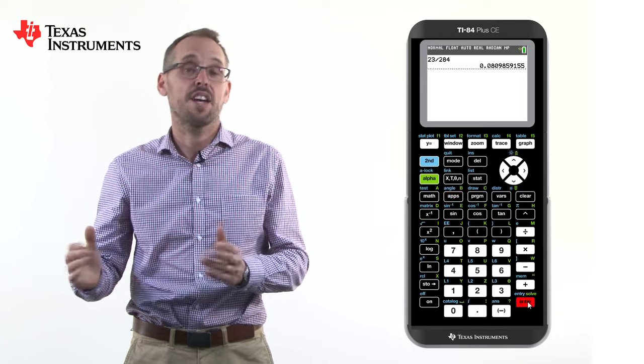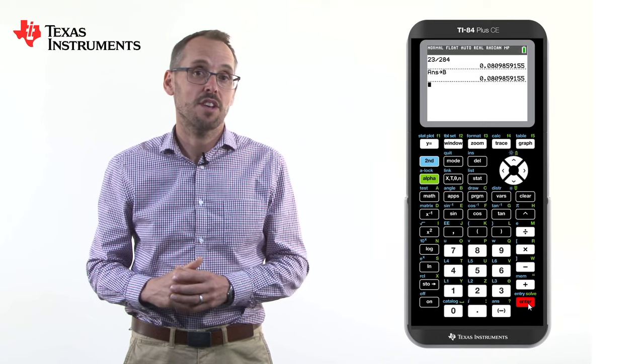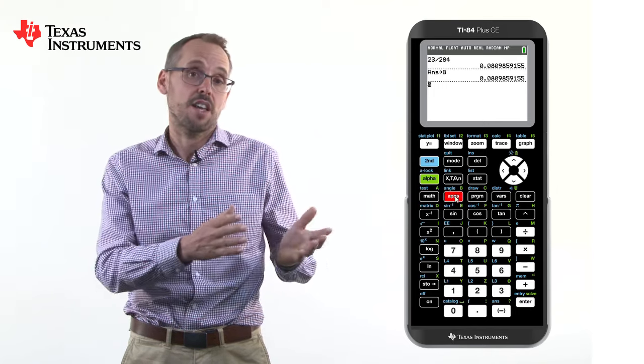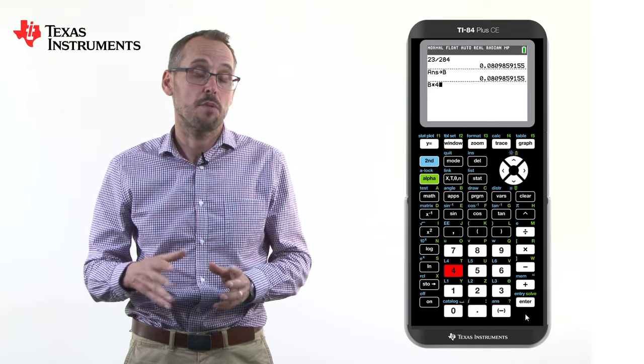That number is now stored as that variable and can be used in later calculations. For example, if we want to times it by four, the answer now is four times as big as the variable it was before.